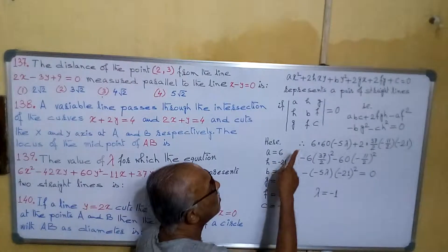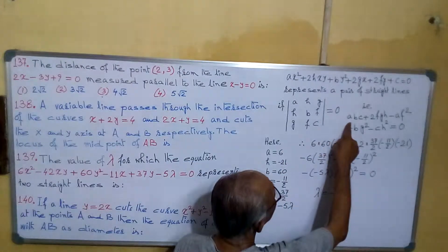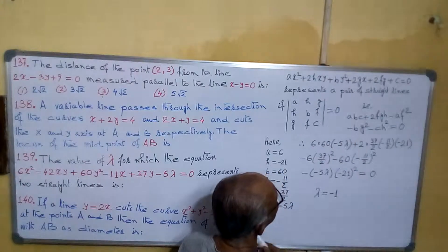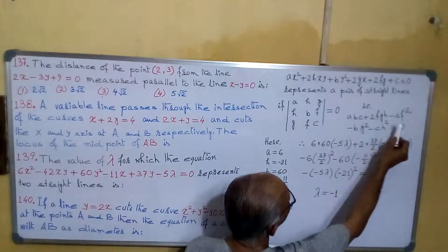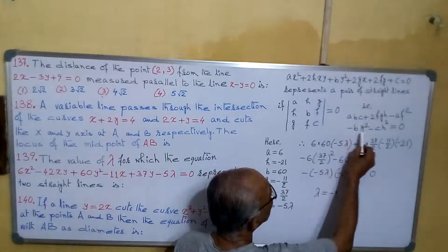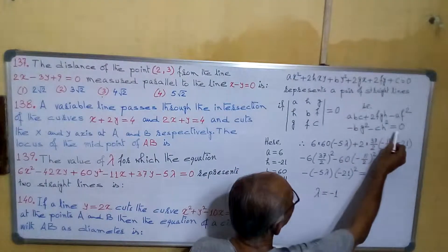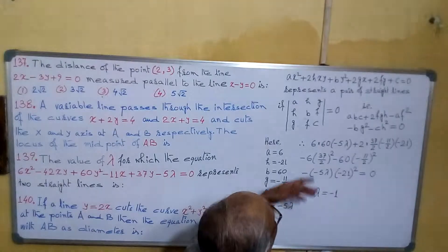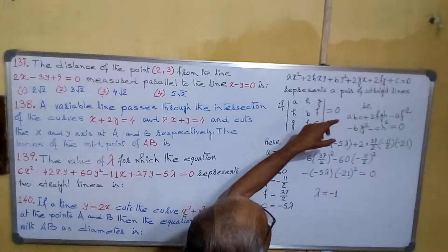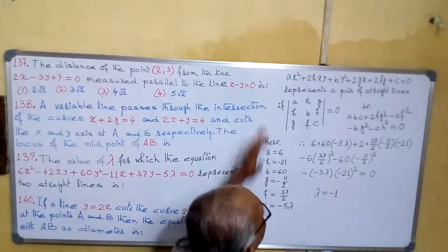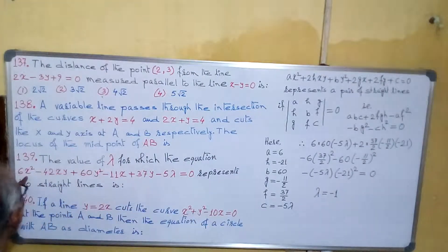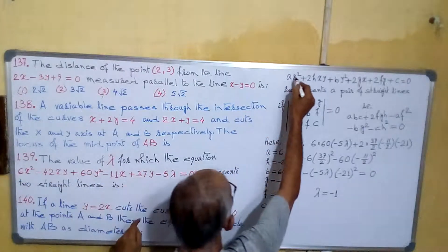Or if you like, you can write this one. This is the same thing as the determinant: abc + 2fgh − f² − bg² − ch² equals to 0. Then only this will represent a pair of straight lines. Now our given equation is this one. Comparing with the general equation,